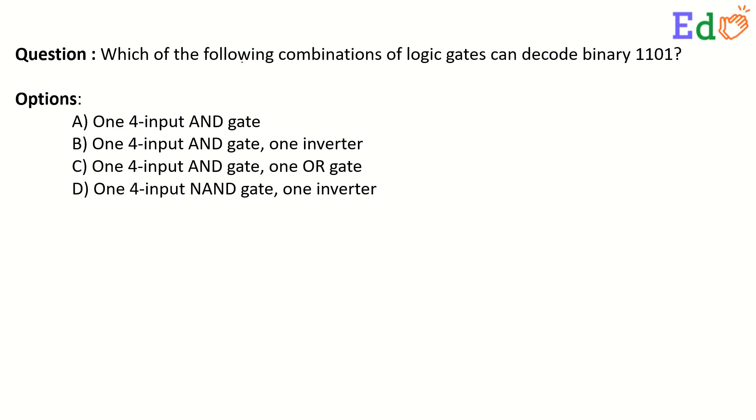We have a problem which states: which of the following combinations of logic gates can decode binary 1101? The options are A: one 4-input AND gate,